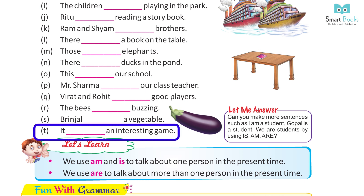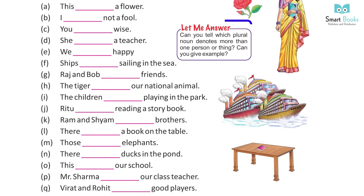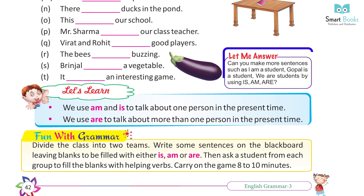Q: Virat and Rohit are good players. R: The bees are buzzing. S: Brinjal is a vegetable. T: It is an interesting game. Can you tell which plural noun denotes more than one person or thing? Can you give an example?